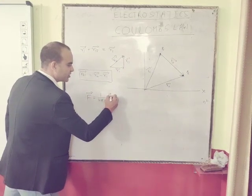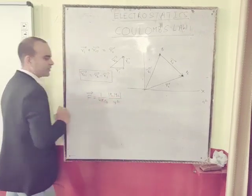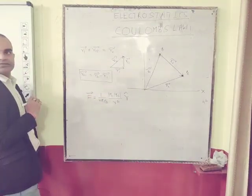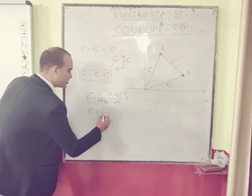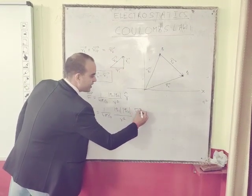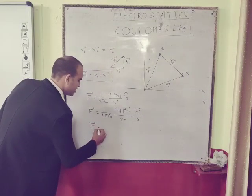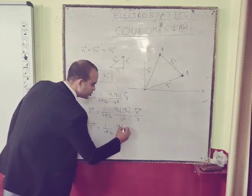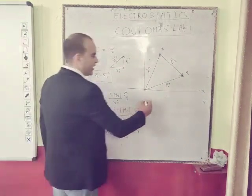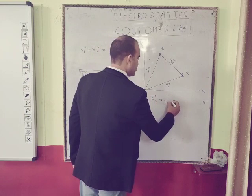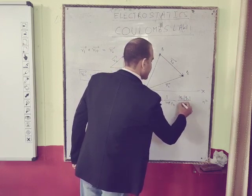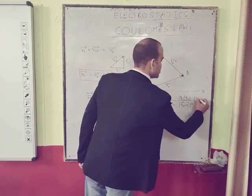The scalar-vector form is F = 1/(4πε₀) · Q1·Q2/R² · R̂ (unit vector). So the vector form is F = 1/(4πε₀) · Q1·Q2/R³ · vector R, which gives F12 = 1/(4πε₀) · Q1·Q2 / |R2 − R1|³ · (R2 − R1).